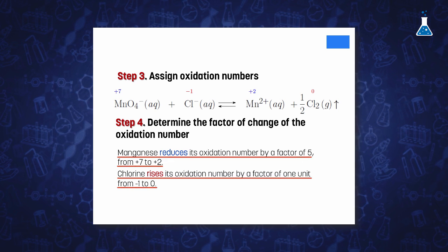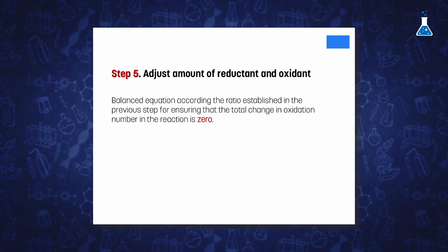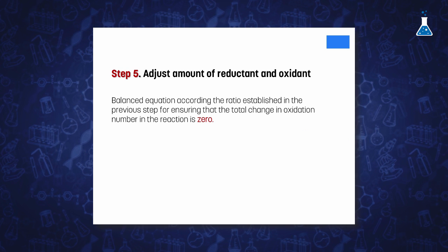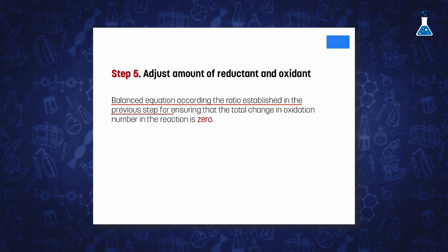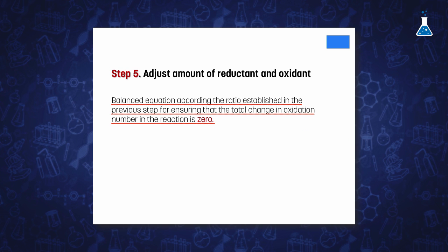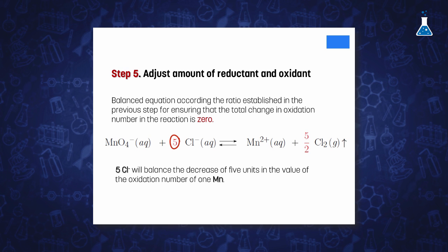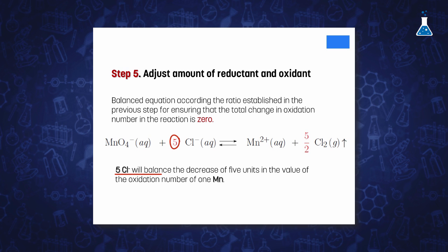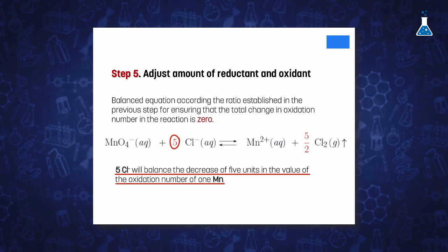Once we know both changing factors, we need to adjust the ratio of both compounds, the substance that is reduced and the compound that is oxidized, in order to fulfill the following rule. In a balanced equation, the total change in oxidation number is zero. According to this requirement, we will need 5 chlorine ions that will support an increase of 8 units in the oxidation state, and that will balance the total decrease of 8 units in the oxidation state for manganese.